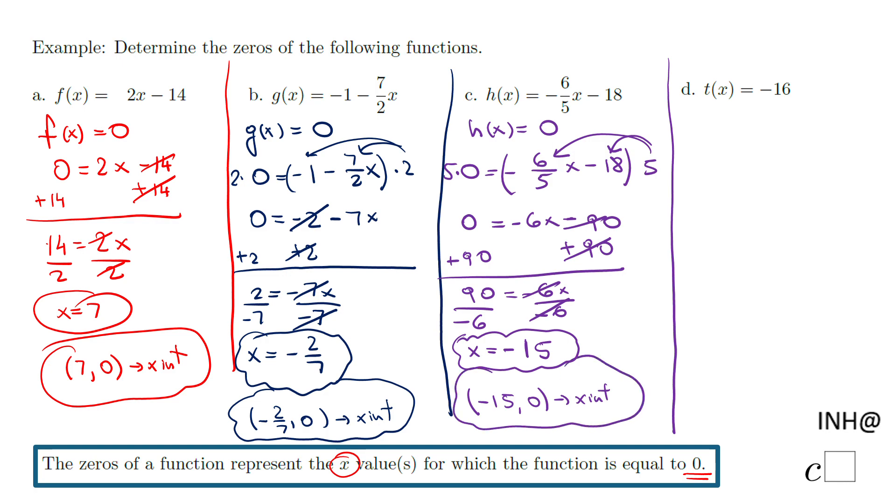Let's go to the last part of this problem, which is this interesting function. T of x equals negative 16. The same idea. I'm going to make the function equal to zero. And I end up with something that looks interesting. Zero equals negative 16. That is false. It's impossible.